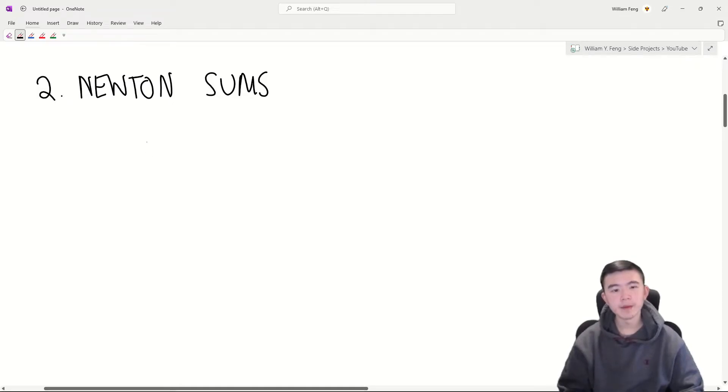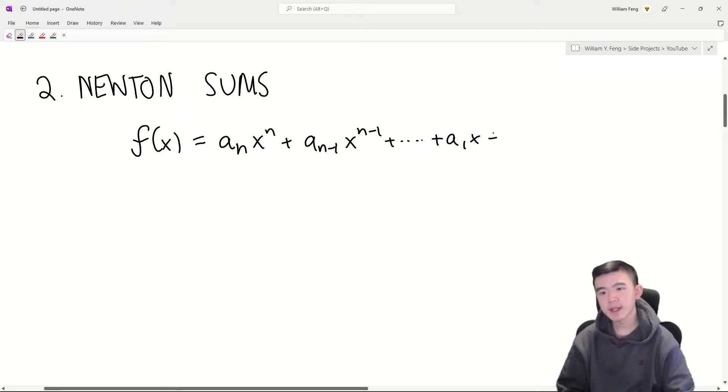Next up are Newton sums. If we have a polynomial of the form an x to the n plus an minus 1 x to the n minus 1, etc., plus a1x plus a0, then we know there are n roots by the fundamental theorem of algebra, counting with multiplicity, x1, x2, and so on up to x to the n.